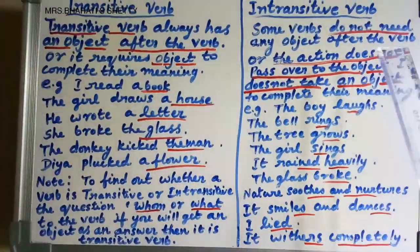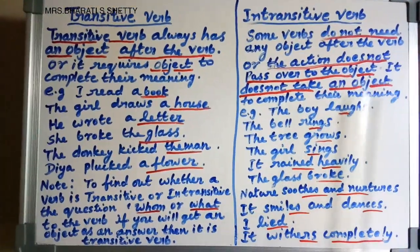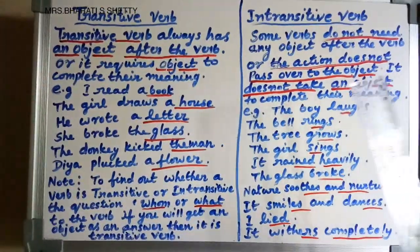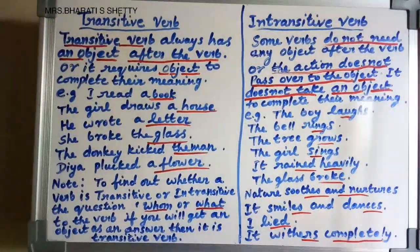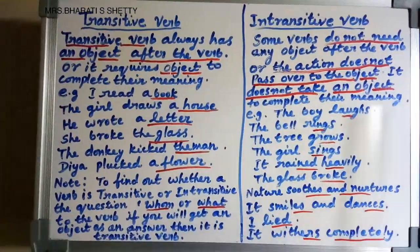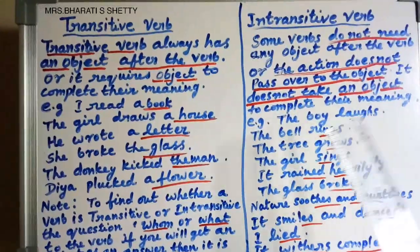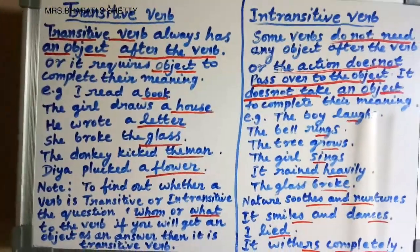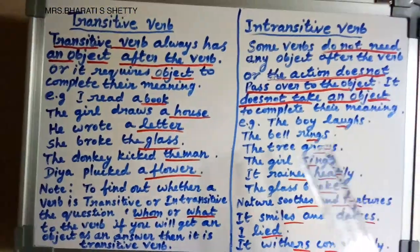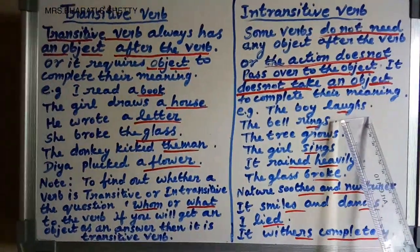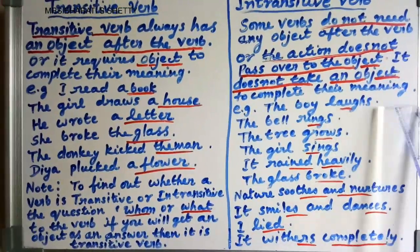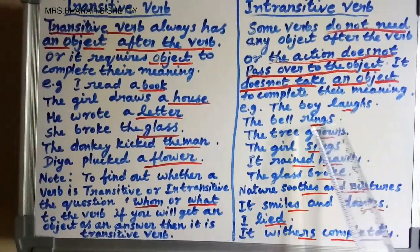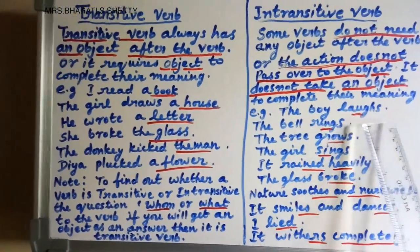Next, intransitive verb. Here, the verb does not need any object after it, or the action does not pass over to the object — it does not take an object to complete its meaning. See example: The boy laughs — here, only verb, no object after it. The bell rings — here also, verb, no object after it.